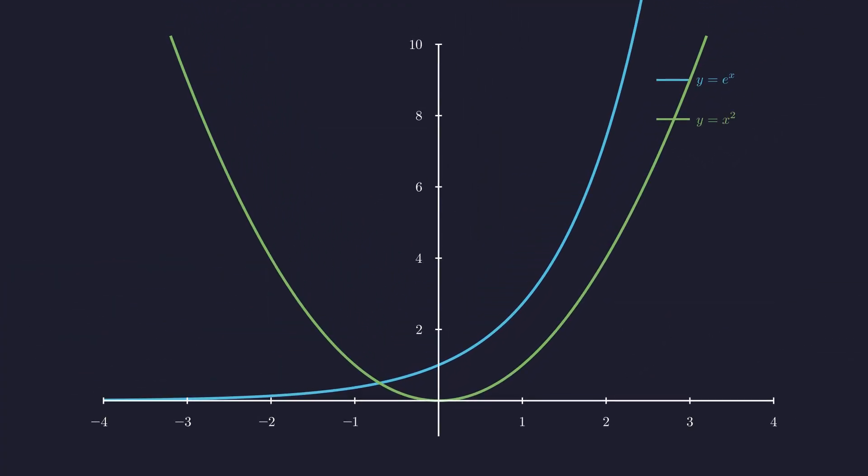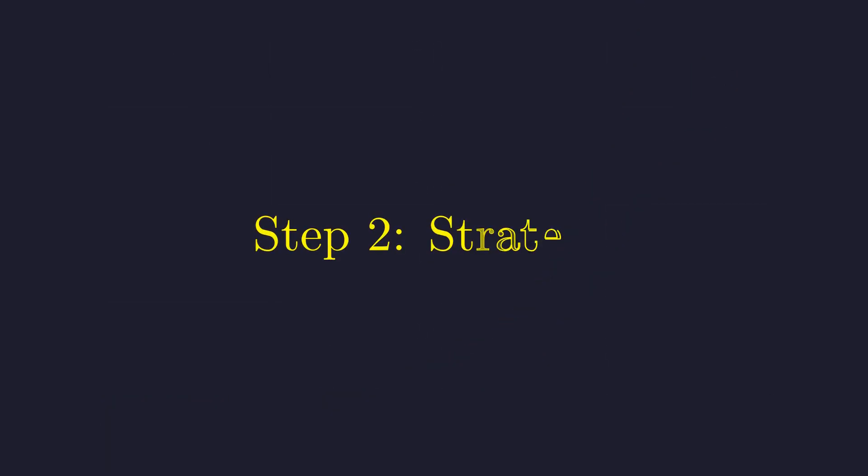Graphs suggest where solutions hide, but only rigorous analysis can guarantee uniqueness and existence. So here's our game plan. We'll prove two things. First, that there are zero solutions when x is non-negative. And second, that there's exactly one solution when x is negative.